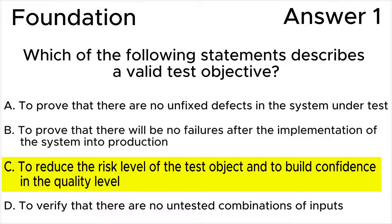The correct answer is C: To reduce the risk level of the test object and to build confidence in the quality level. Because testing finds defects and failures which reduces the level of risk and at the same time gives more confidence in the quality level of the test object.